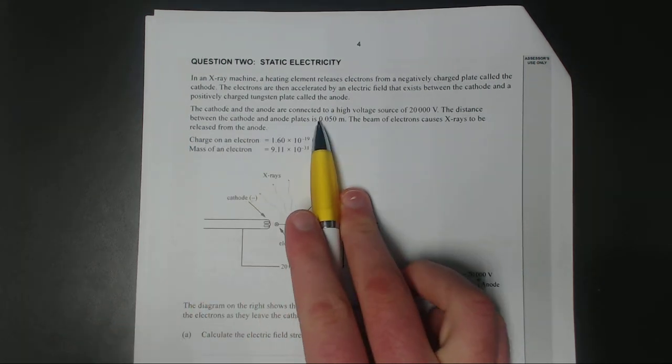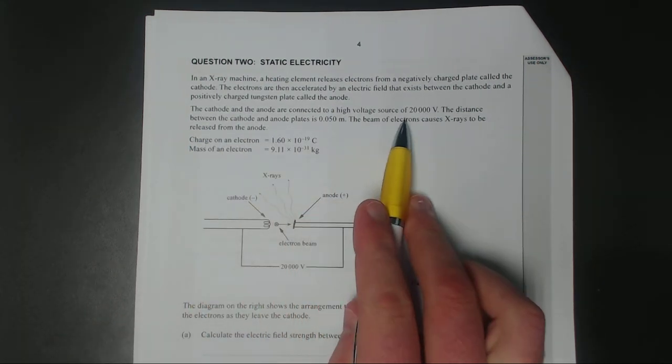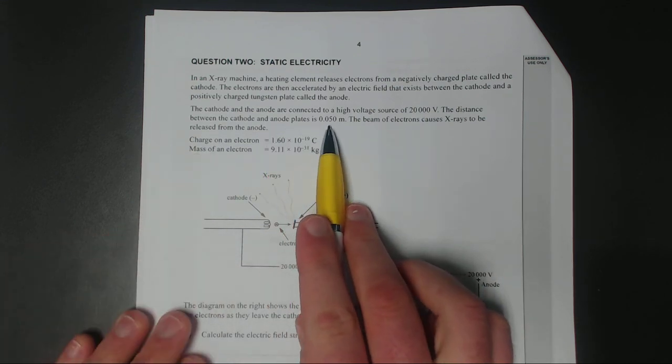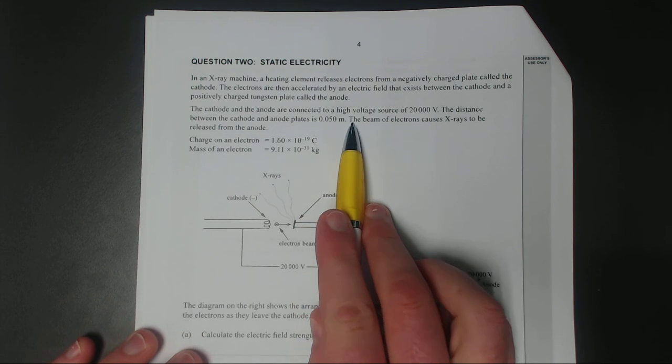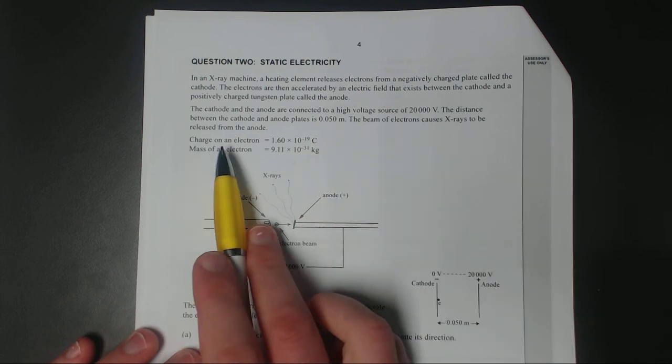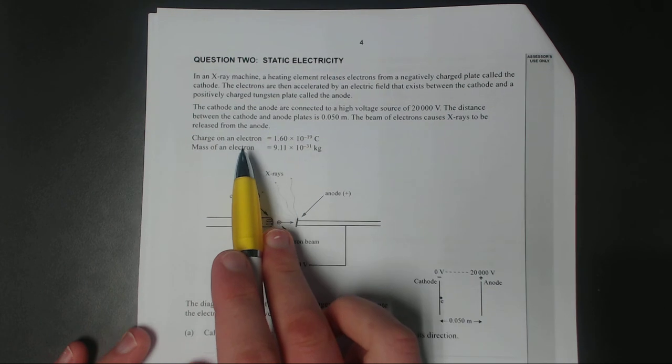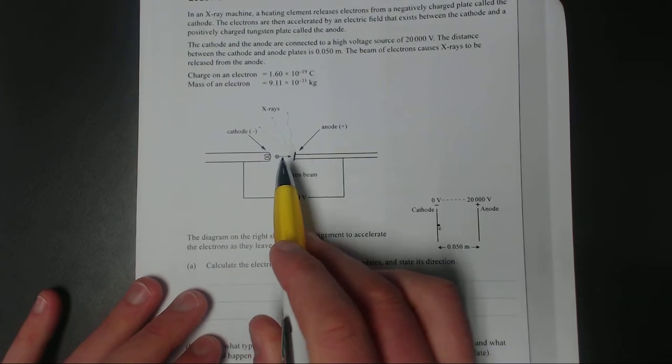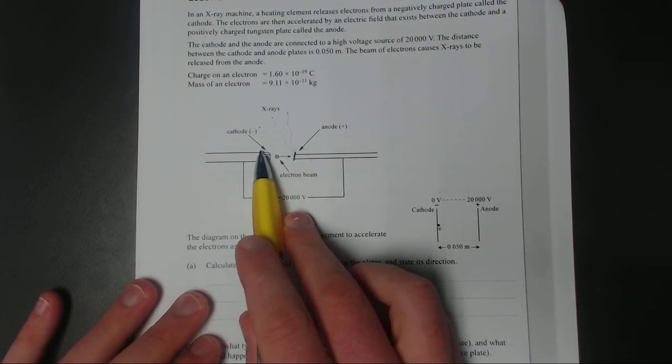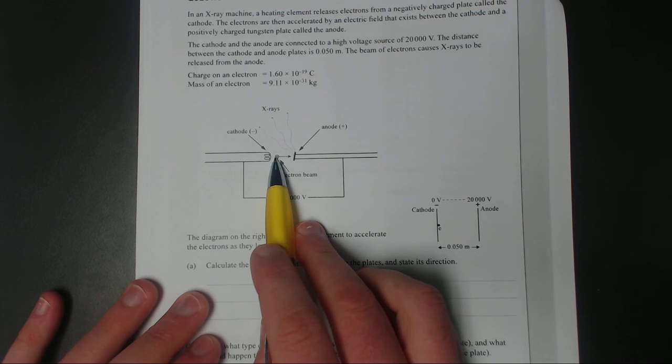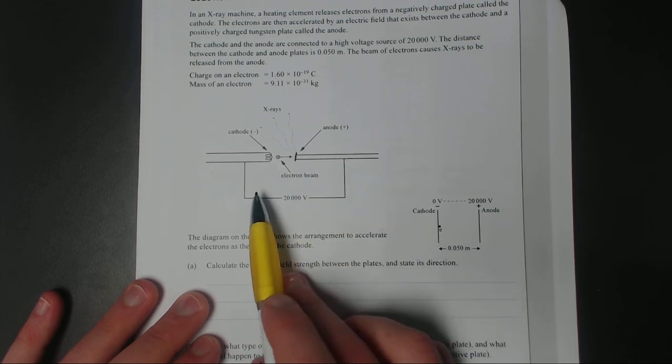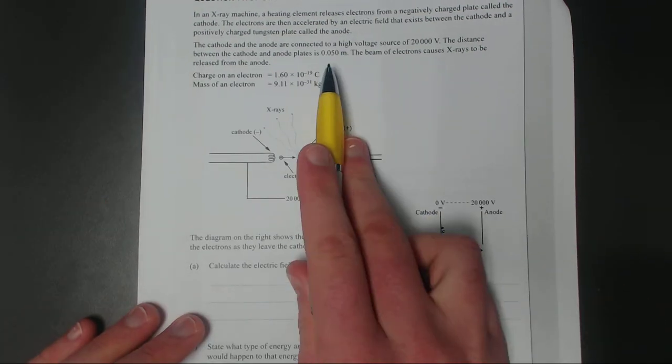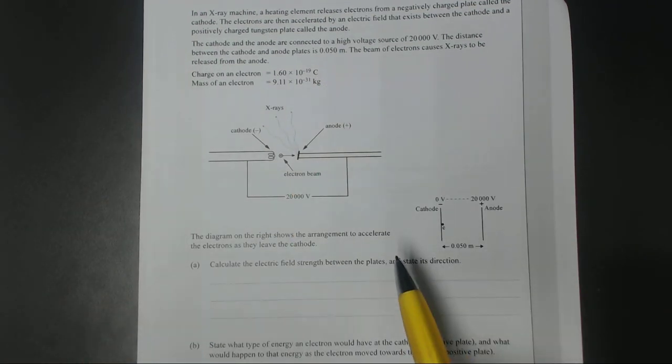The cathode and the anode are connected to a high voltage source of 20,000 volts. The distance between the cathode and the anode is 5 centimeters. The beam of electrons causes x-rays to be released from the cathode. So it gives you the charge on the electron, mass of the electron, and here's the setup. We've got the cathode where the electrons are generated, the electron buzzing to the anode. The distance between the two plates is 5 centimeters or 0.05 meters.